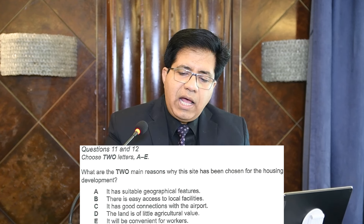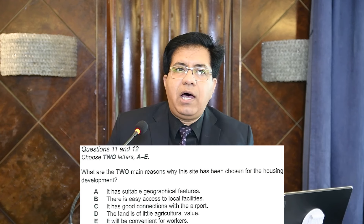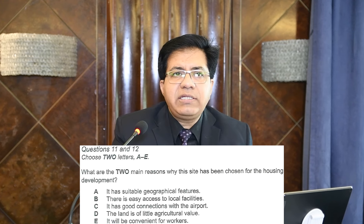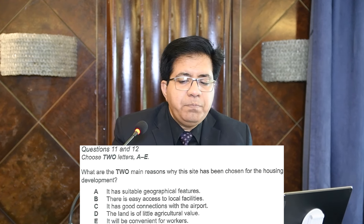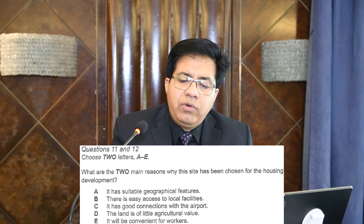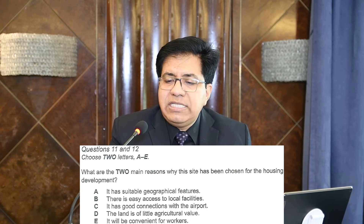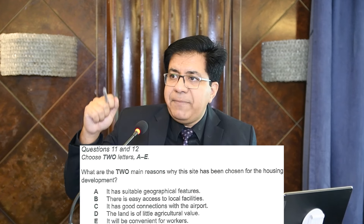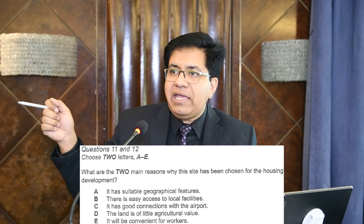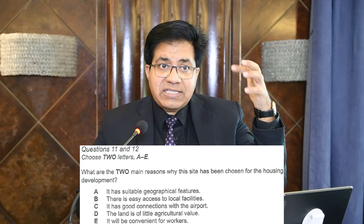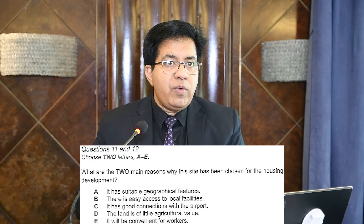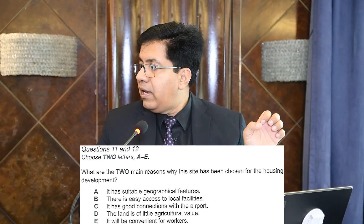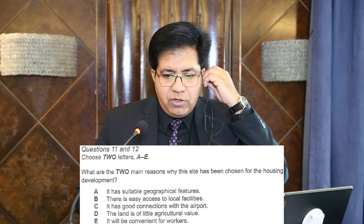The correct answers are option E and option B — you may write them in any order. Now write down this code: D, E, C, B, A. This is the order in which they discussed all the options. I'm going to play the audio again and go through each option to explain why three are wrong and two are right.